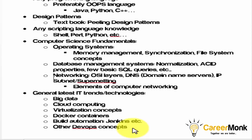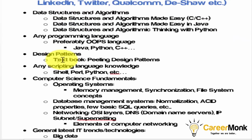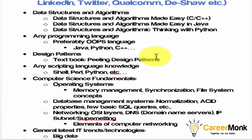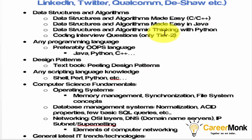These are the common things required for tier 1 and tier 2 company interview preparation. For tier 1 companies, get any of the data structures books along with the Peeling Design Patterns textbook.